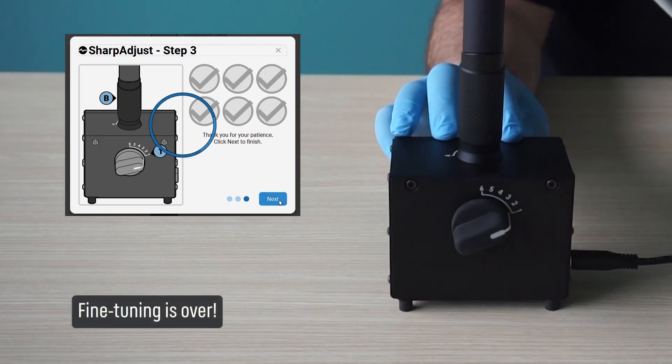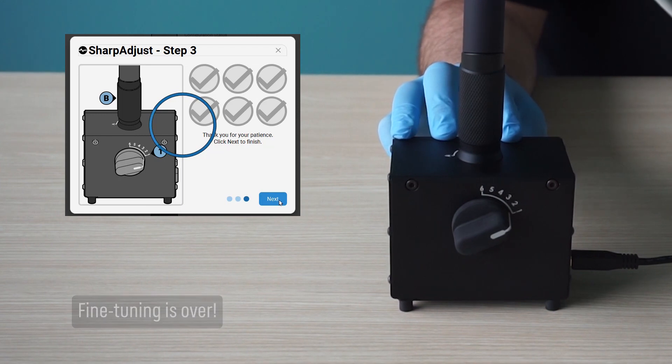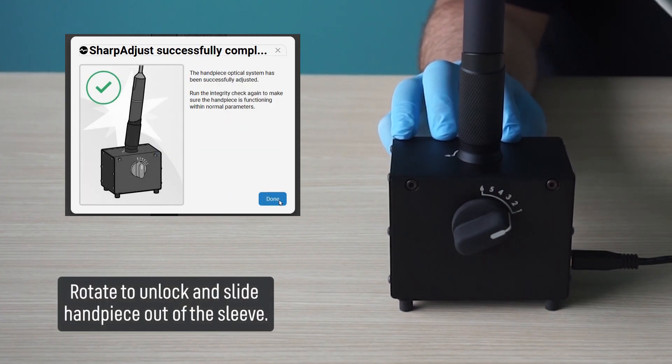Fine-tuning is over. Rotate to unlock and slide handpiece out of the sleeve.